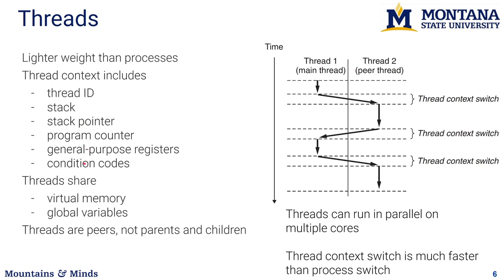Each thread has its own registers and condition codes, so in that sense each thread is its own process with its own stack space and registers. But threads share virtual memory — they share the same code, so you don't need to duplicate the text portion of memory. They also share global variables, making it much easier to communicate data between threads just by writing and reading from globals. There's also no hierarchy — all threads are just threads running in a pool, with no concept of parent-child or master-slave.